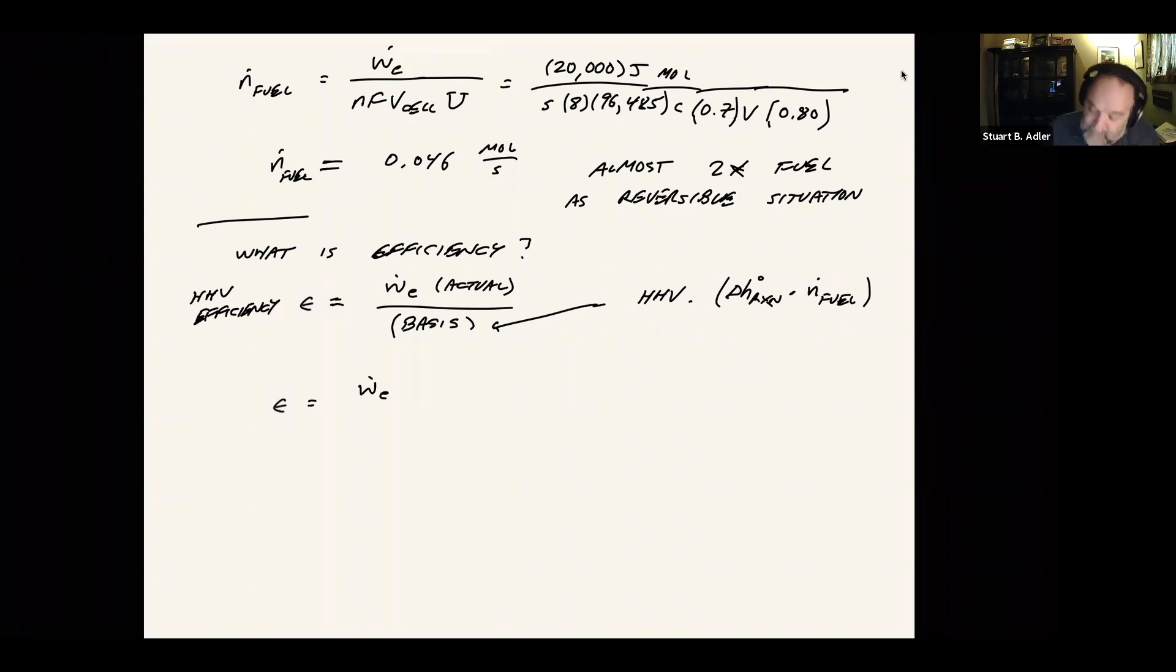Another is to just think about the efficiency of the fuel cell itself as a device. Then typically you would take W actual and instead you divide this by the reversible work, which is the numbers we were calculating when we were looking at the reversible cell potential and multiplying that by the current. In that situation, this is sort of like a theoretical work. And this is telling us, this is what I would call the exergetic efficiency. What that's telling us is about the reversibility of the fuel cell itself.